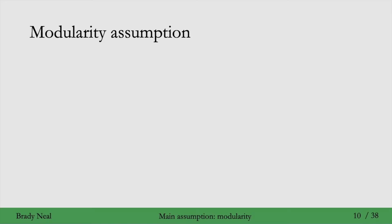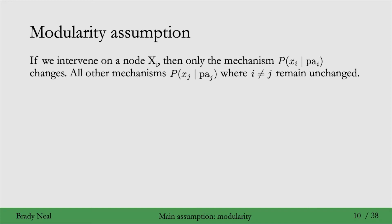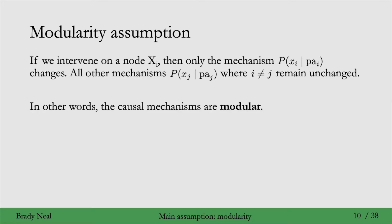With causal mechanism defined, we can give the intuition for the modularity assumption. This is that if we intervene on a node x sub i, then the only mechanism that changes is the mechanism for x sub i. All other mechanisms for any other variables remain completely unchanged. In other words, the causal mechanisms are modular — changing the causal mechanism for one variable doesn't change the causal mechanisms for any of the other variables. Interventions are local, in a sense.